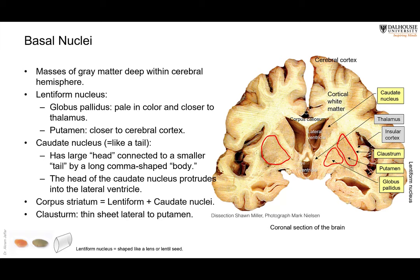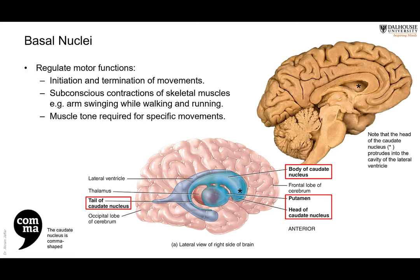Together, the putamen and globus pallidus form the lentiform nucleus. Going a little lateral, there is a very thin plate of gray matter just deep to the cortex of the insula — this is called the claustrum. In addition to the lentiform nucleus and claustrum, the basal ganglia include another nucleus called the caudate nucleus. It is called the caudate nucleus because it has a tail — a head, body, and tail. The head is very prominent and projects into the lateral ventricle of the brain.